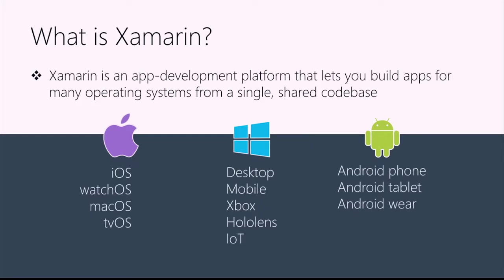We want to make amazing native high-performance applications, but using native tools means maintaining separate code bases. This is where Xamarin comes in. Xamarin is a cross-platform mobile development strategy and toolset that allows us to write cross-platform applications in C# using a shared code base. This helps us get to market faster, makes code maintenance much easier, and means we can more easily hit all of these platforms.